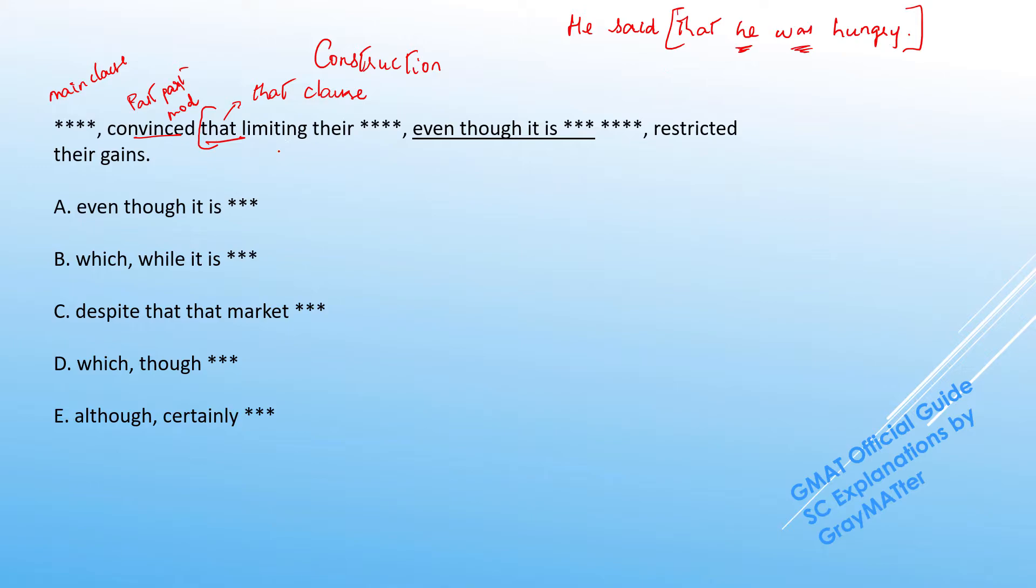In the same way, if you see the construction of the sentence, we have they are convinced that limiting their something. So this limiting becomes an ing form of the verb used as a noun. So this is a gerund and this is acting as the subject of this that clause. Now if there is a subject, obviously it needs a verb. Now we can see that we have a very lengthy subject here, limiting their investments, followed by a comma and then we have a dependent clause, even though it is something. But we can see that this dependent clause is constructed within commas and we can kind of read around this to see the actual picture.